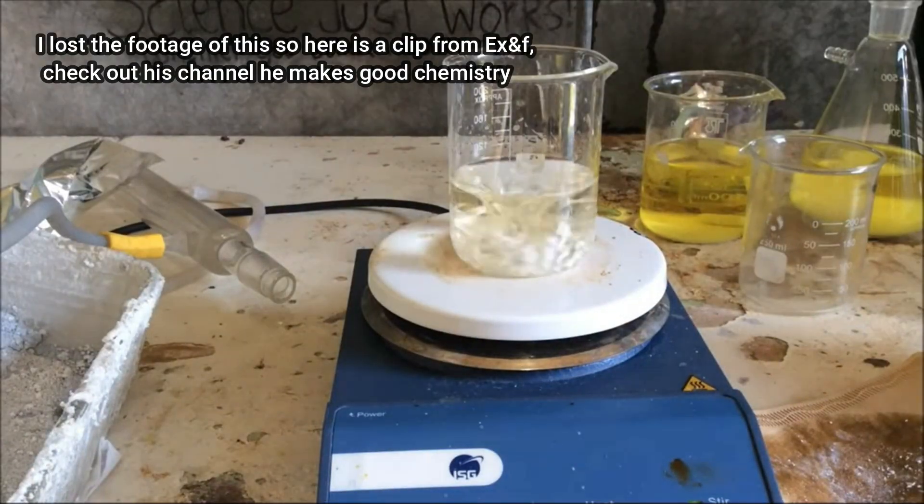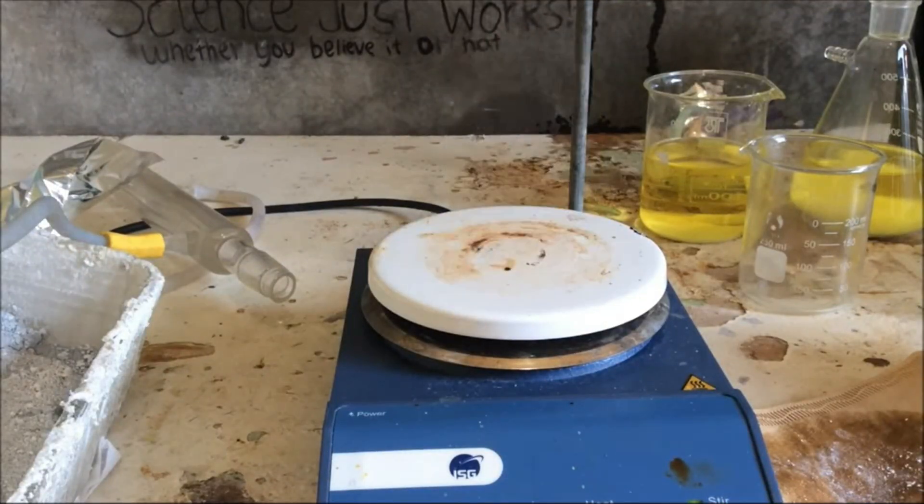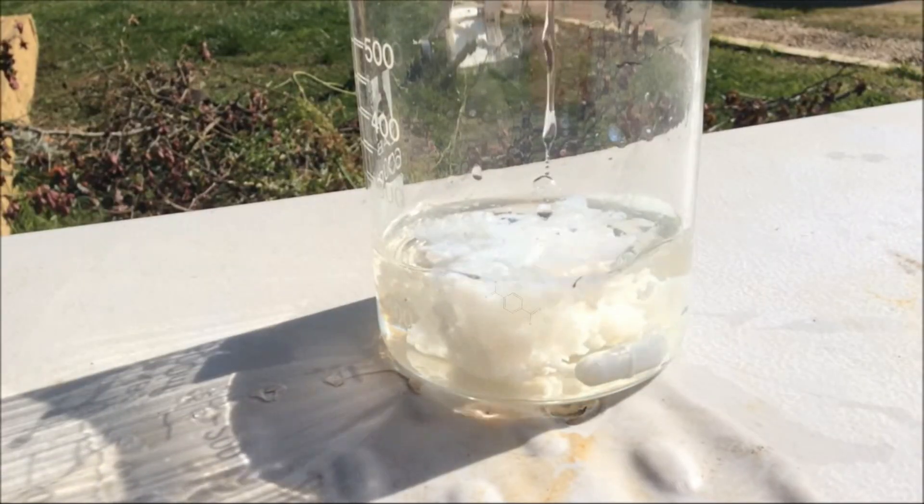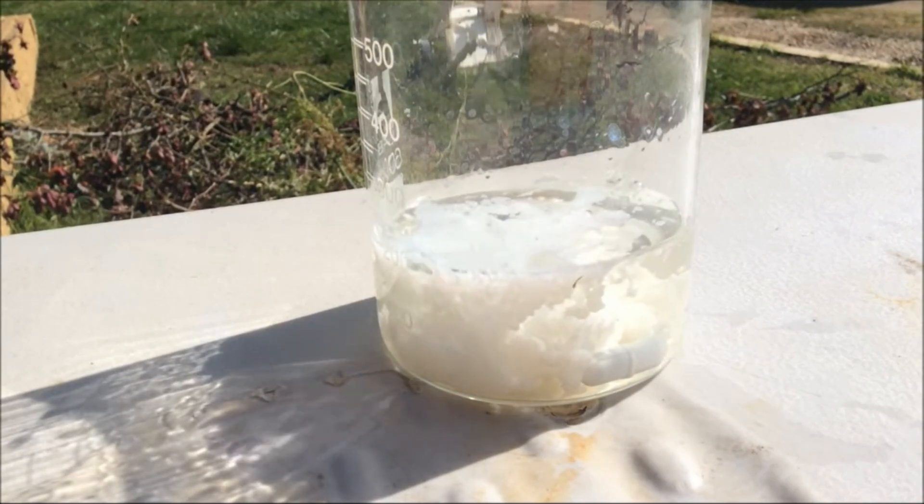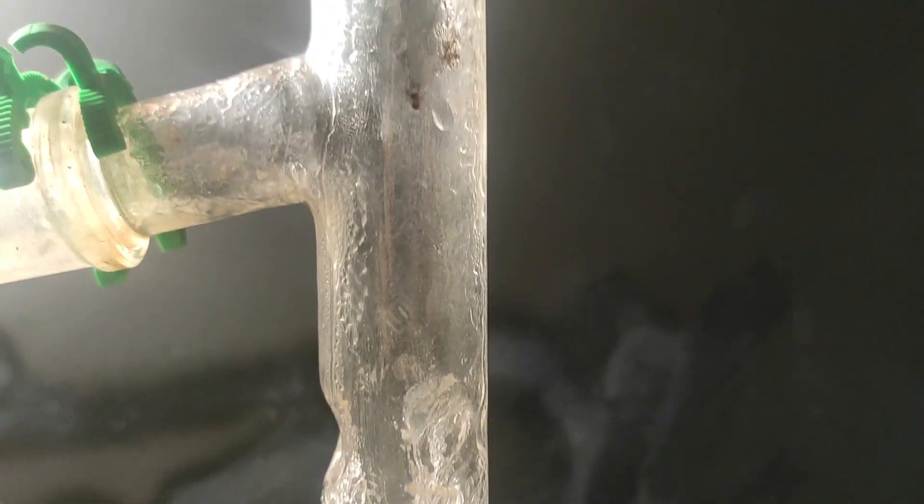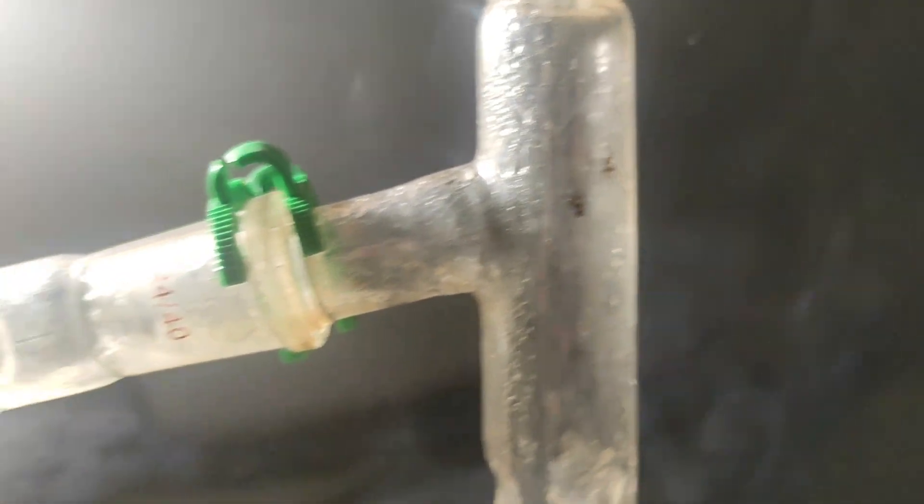The first one is to dissolve the terephthalate in water, and precipitate the terephthalic acid by adding any strong acid like hydrochloric acid or sulfuric acid. This is great if we want some pure terephthalic acid, and it might lead to a better yield if used to make benzene.